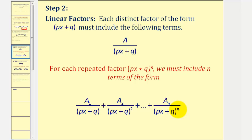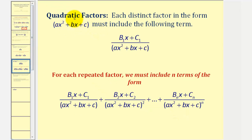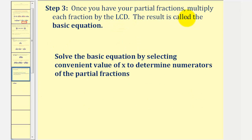For quadratic factors, we must include fractions where the numerator consists of linear terms and the denominator is the quadratic factor. For repeated quadratic factors, we include fractions until we have all n repeated quadratic factors. Once we have the partial fractions, we multiply each fraction by the LCD and the result is called the basic equation. The last step is to solve the basic equation by selecting convenient values of x to determine the numerators of the partial fractions.